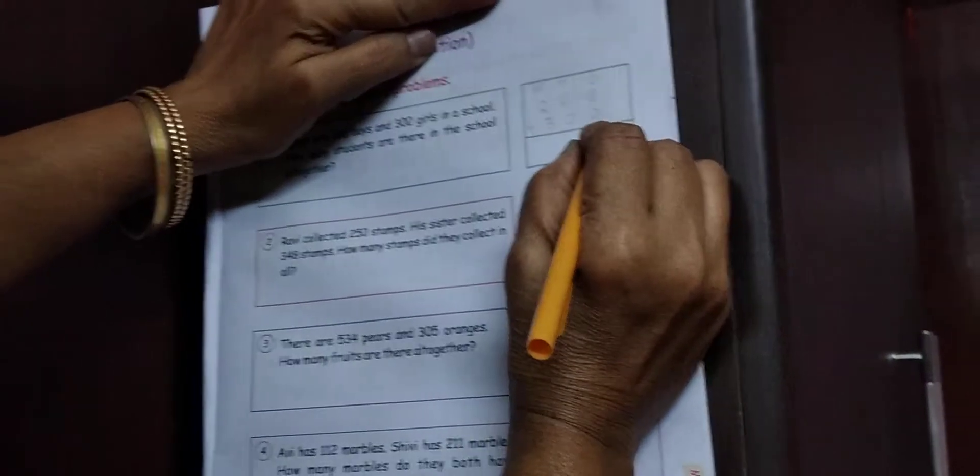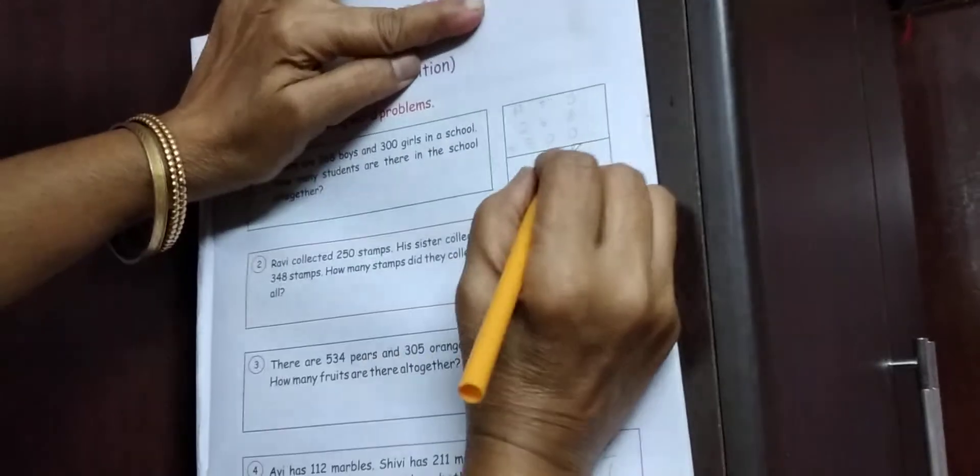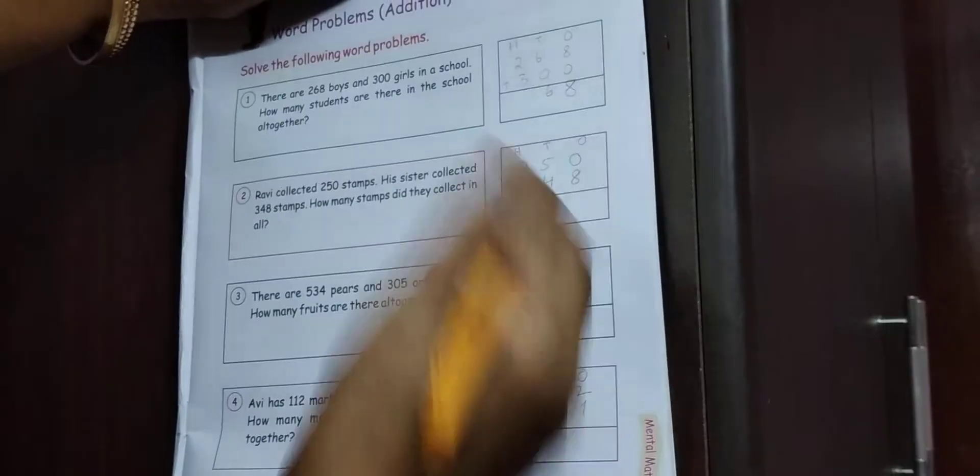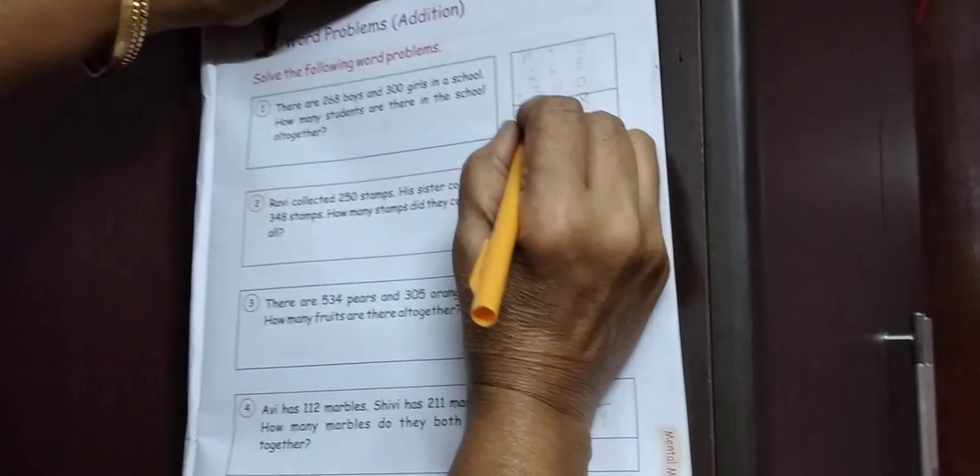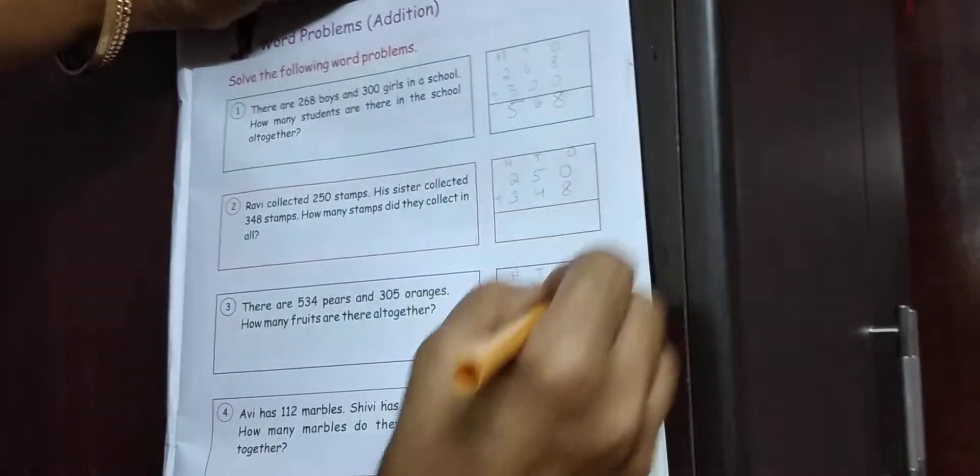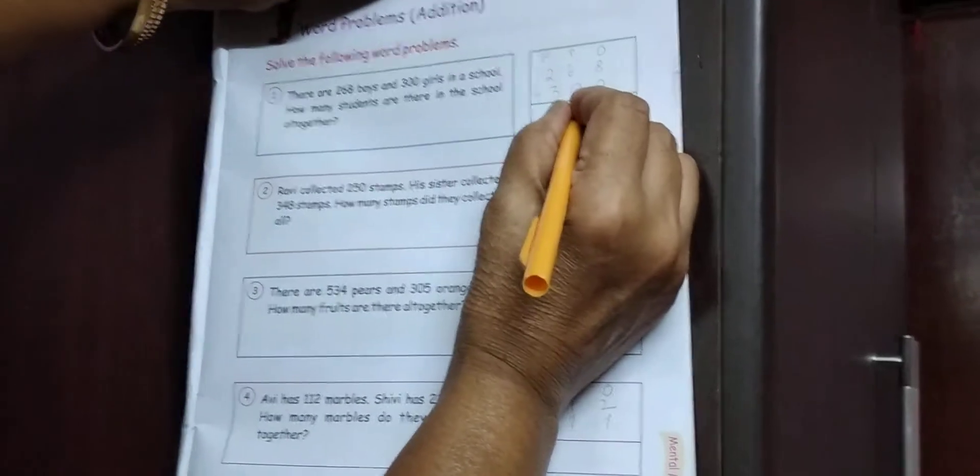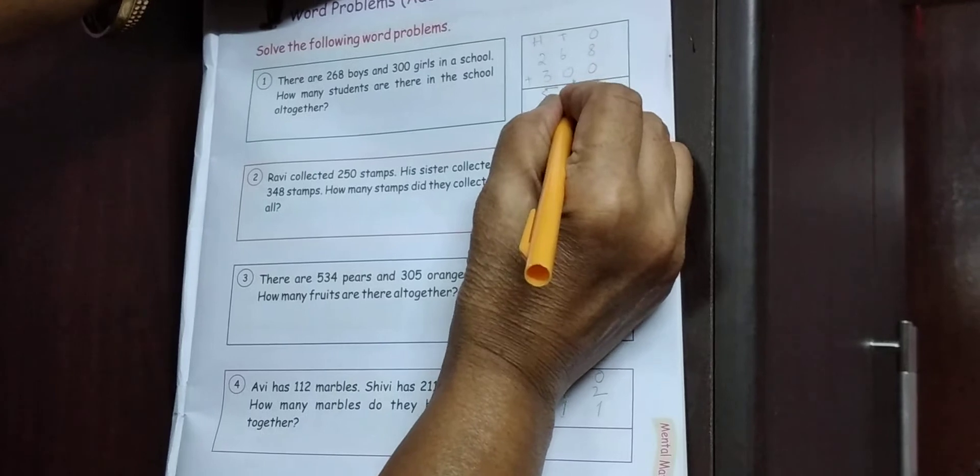8 का 8. 6 का 6. 3 और तुम 4, 5. Students, look at the page. कितना हुआ? 5, 6, 8. 5, 6, 8.